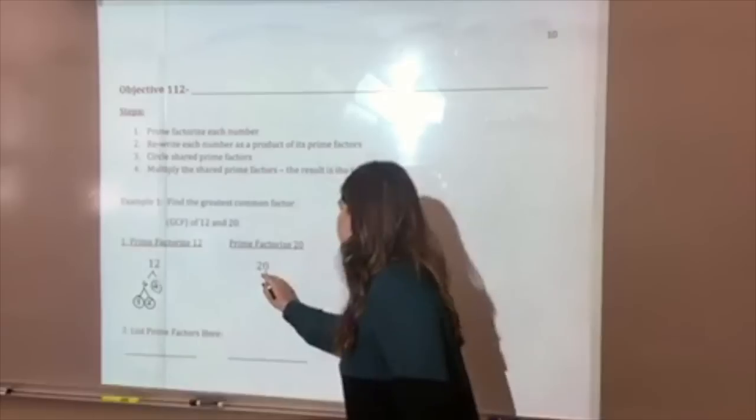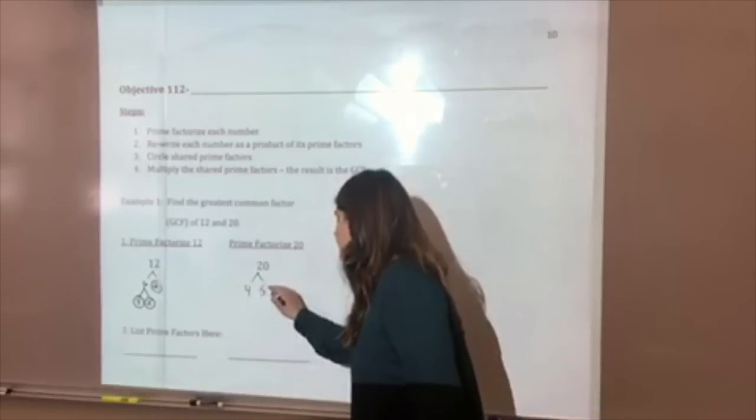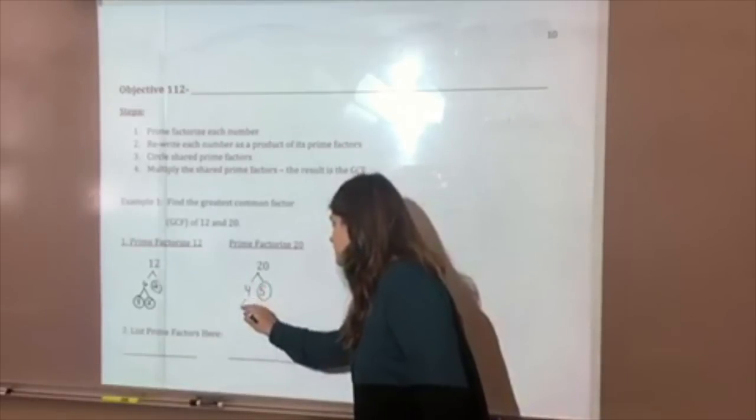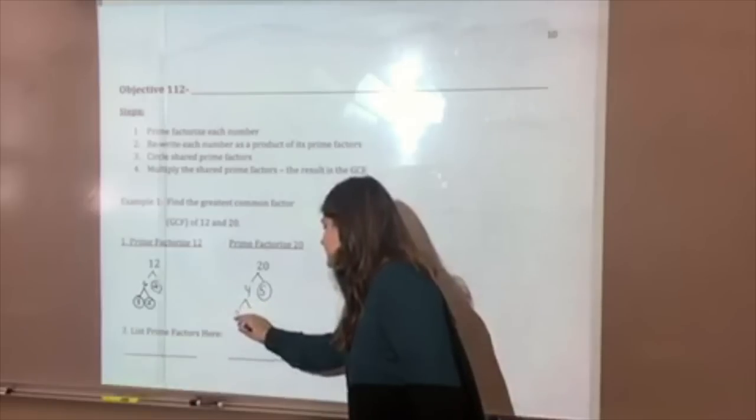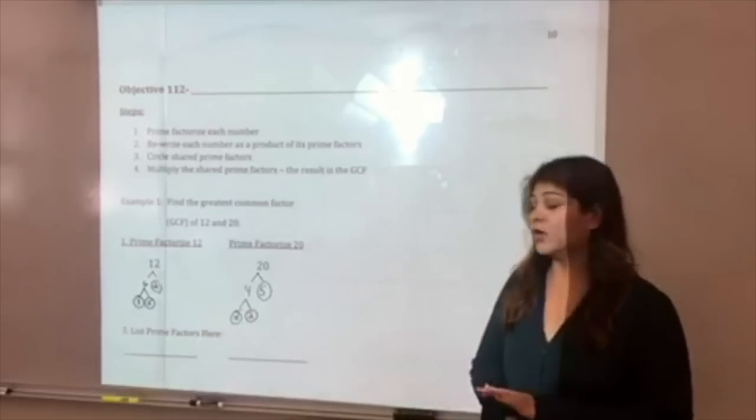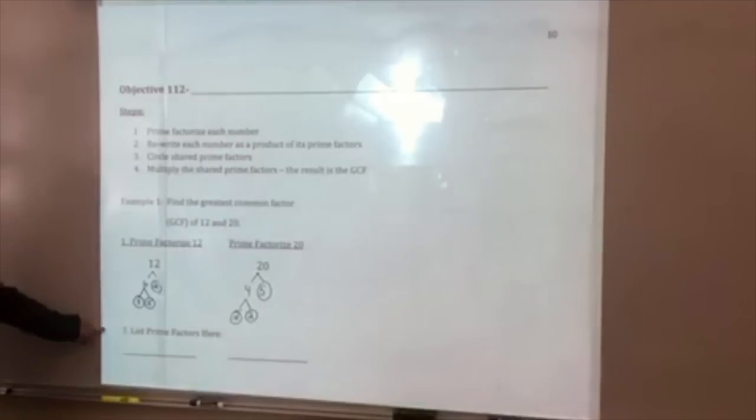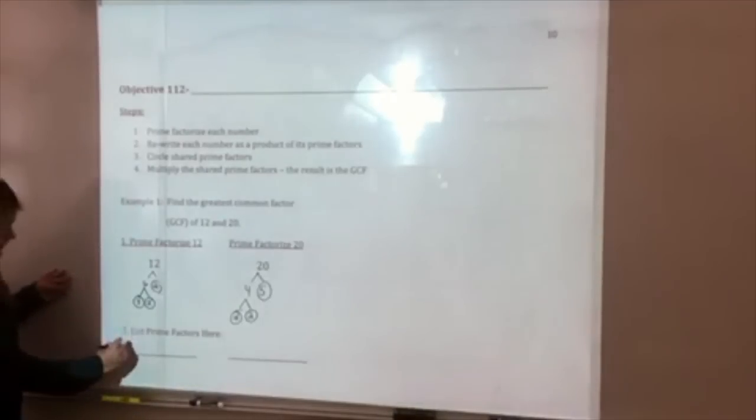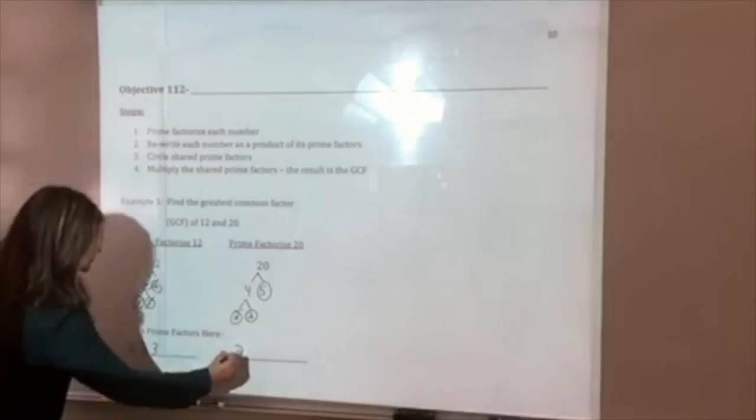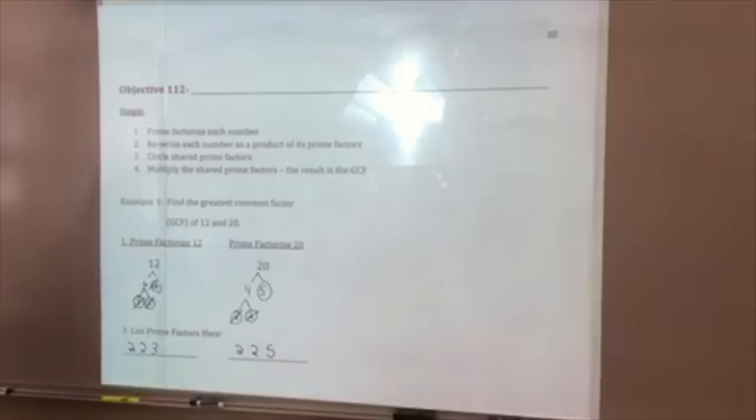I'm going to do the same for 20. I'm going to choose 4 and 5. 5 is prime, so I circle it. And I'm going to continue breaking down 4 until I have a list of all my factors. I'm going to list them out from least to greatest. So I have 2, and I'm going to cross off as I go, times 2, times 3. And for 20, I have 2 times 2 times 5. So we have finished step 1 and step 2.